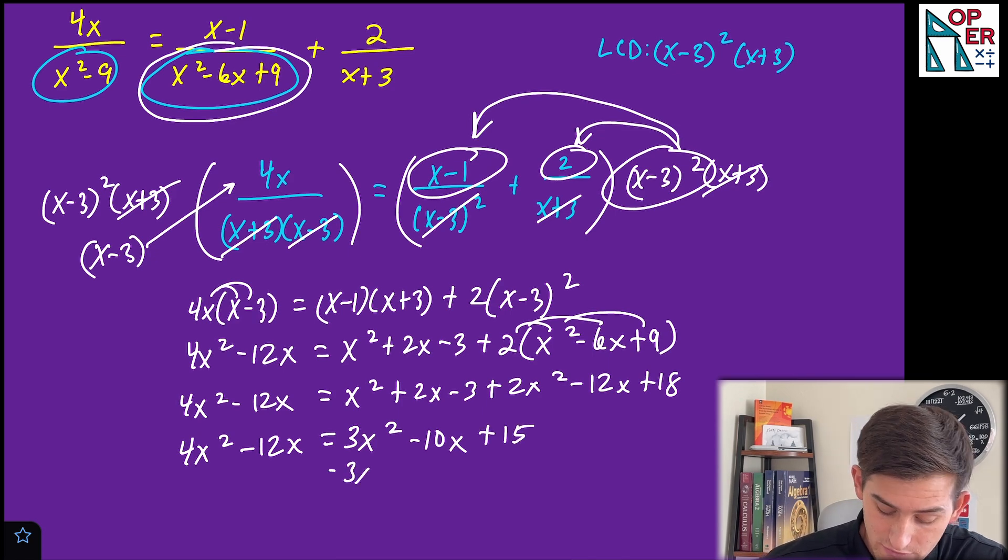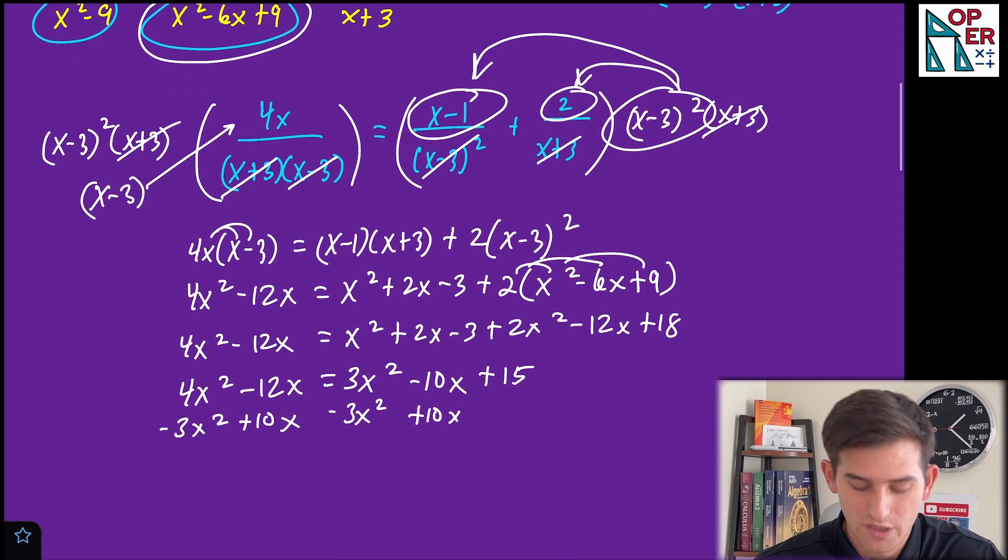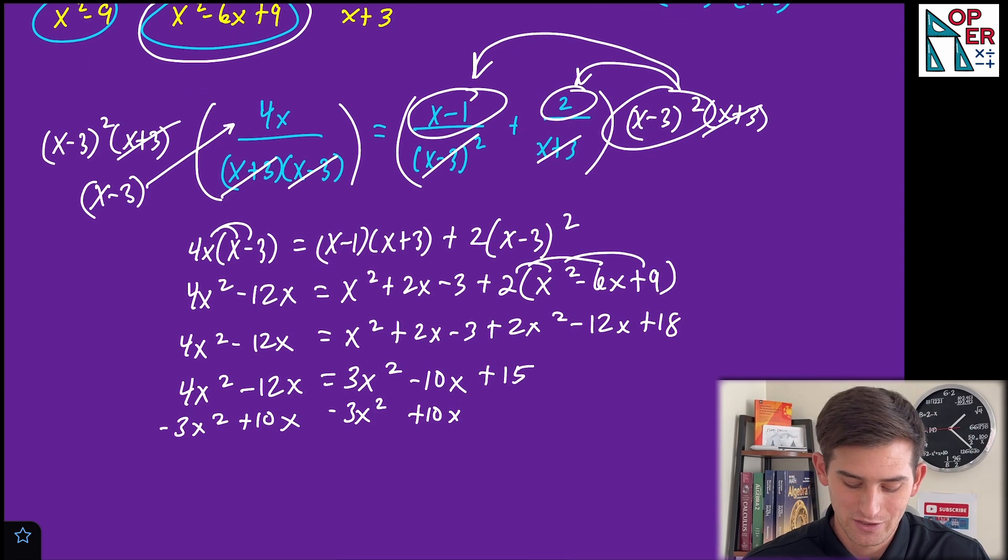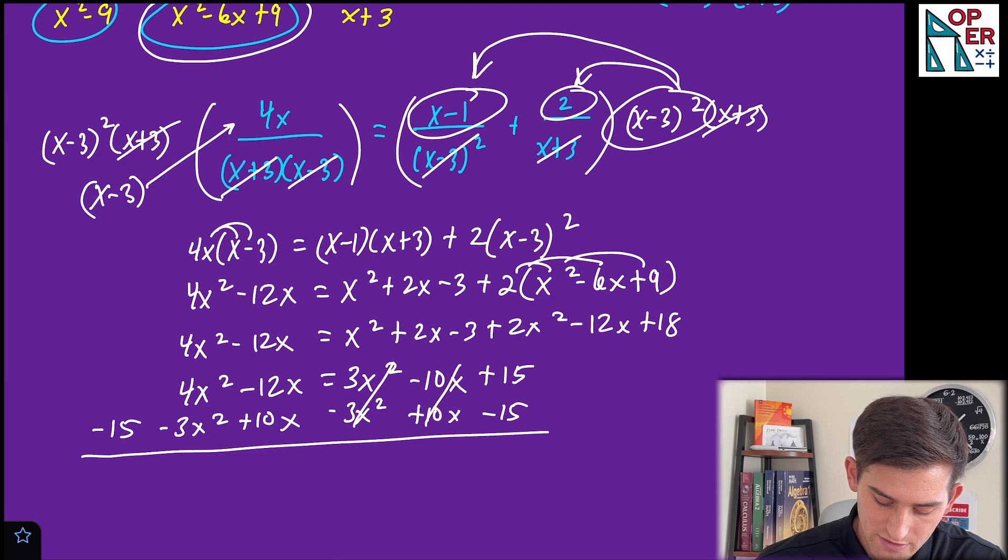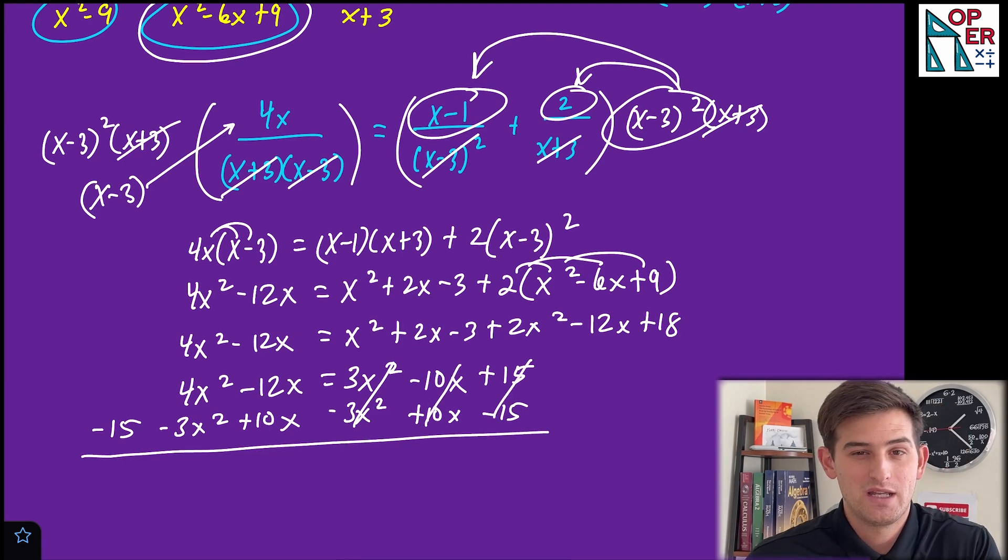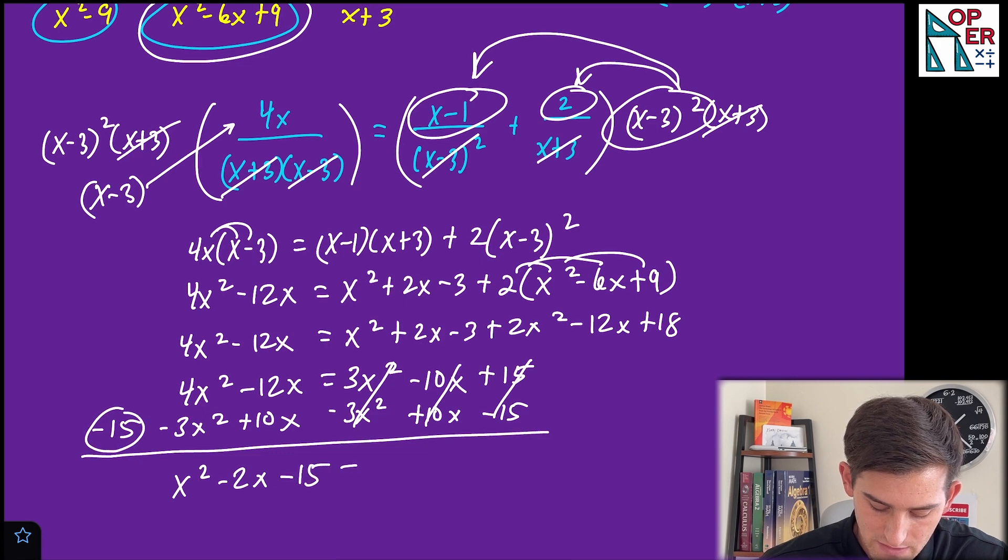Now let's move three X squared and negative 10X to the other side by doing the opposite. And we're going to move the 15 over as well, but I really don't have a place to put it right now, so I could write it like this and just put it out here on the side. And now we're canceling everything on the right side because I noticed this is a quadratic, so let's set it equal to zero. So four X squared minus three X squared would be X squared. Negative 12X plus 10X would be minus two X and then we have this minus 15 and that's equal to zero.